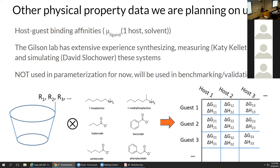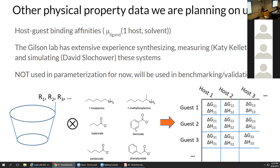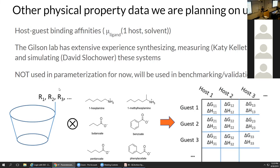Another physical property data source is host-guest binding affinity. The Gilson lab has extensive experience synthesizing, measuring, and simulating these systems. The key is that you can functionalize these host systems and test with a large range of different hosts with different chemical functionality — it's a probe of not just getting a single host right, but varying the chemistries and getting the differences in chemistry right.